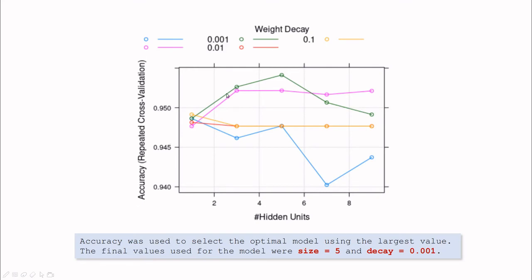You run this and get something like that. Here you can see accuracy versus the number of hidden units—this is like logistic regression, three neurons, five, seven, and nine for different decay rates. Cross-validation is telling us that the best model in terms of accuracy is a neural network with five neurons in the hidden layer.